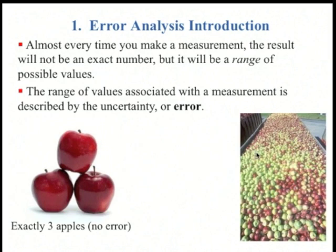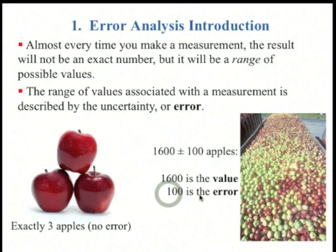However, if you're counting a larger number of apples, like the number of apples in the back of this truck, we might say there's 1600, but there's probably an error associated with that. A better way to write it would be to say there are 1600 plus or minus 100 apples. 1600 is the value, and 100 is what's called the error.